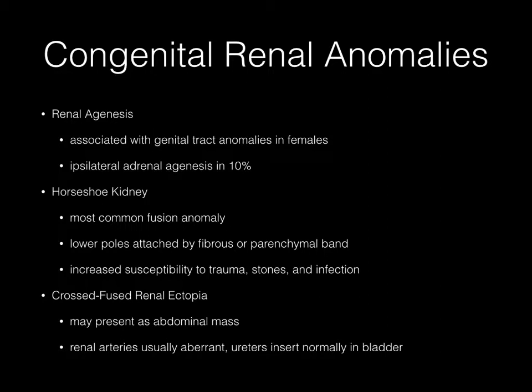Horseshoe kidney is the most common fusion anomaly. The lower poles of the kidneys are usually attached by either a fibrous or parenchymal band, and horseshoe kidneys have increased susceptibility to trauma, developing stones, and infection. The final entity is cross-fused renal ectopia, which may present as an abdominal mass. The renal arteries are usually aberrant, but the ureters insert normally into the urinary bladder.